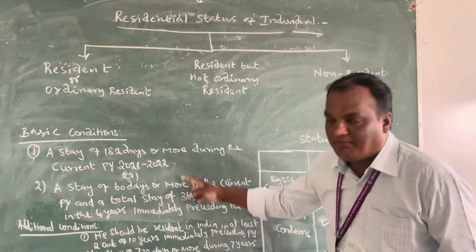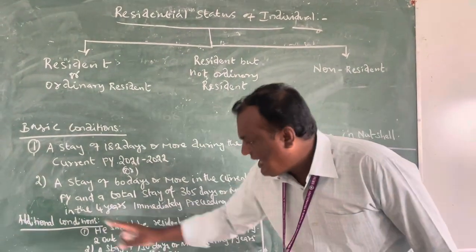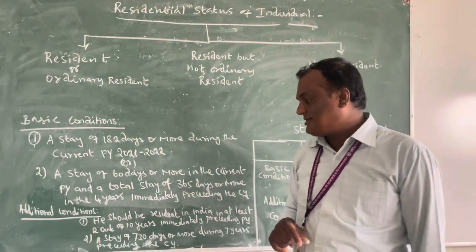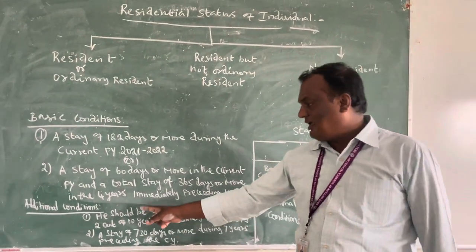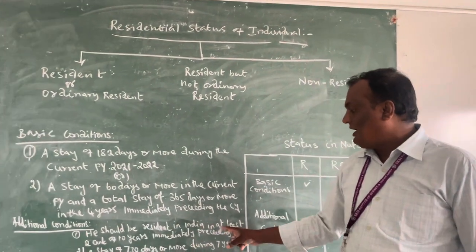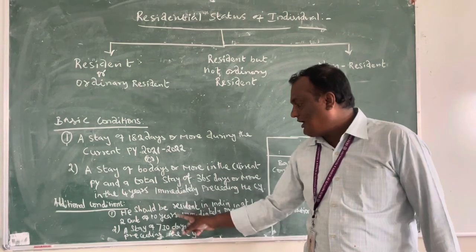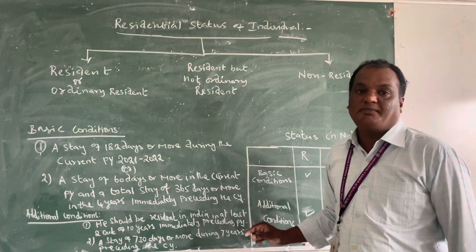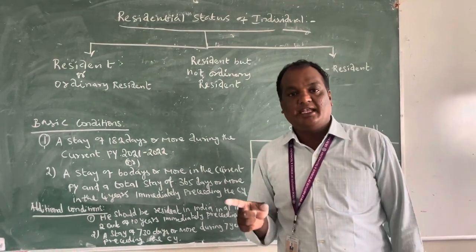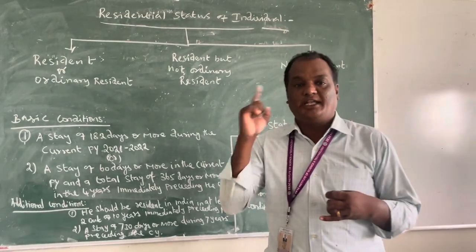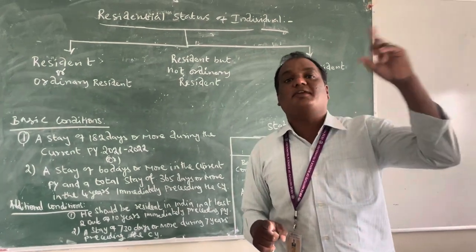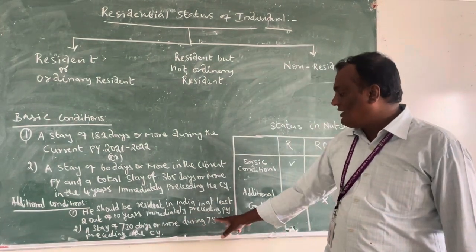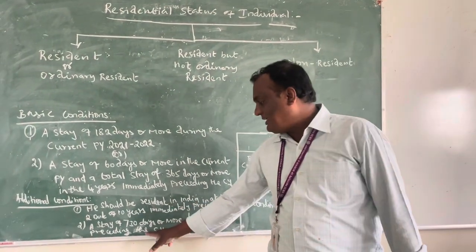These are the two basic conditions. The Additional Condition is also most important for determining the residential status. The first additional condition is that he should be resident in India in at least 2 out of 10 years immediately preceding the previous year. The second additional condition is that he should stay 735 days or more during the 7 years preceding the current year.